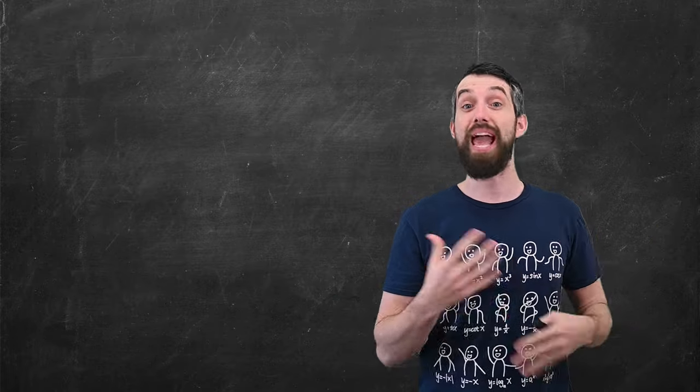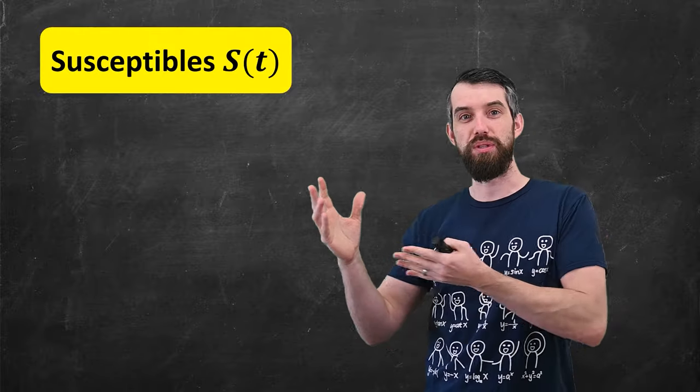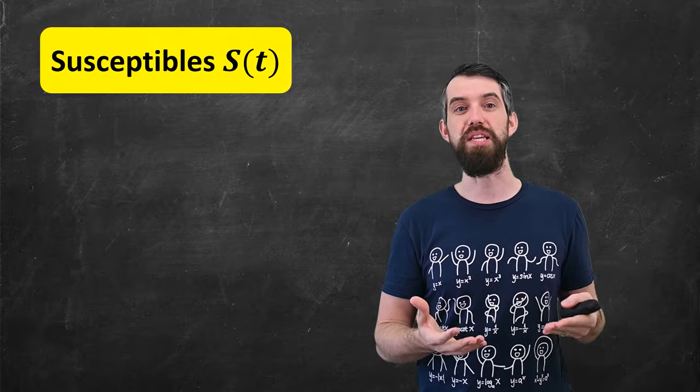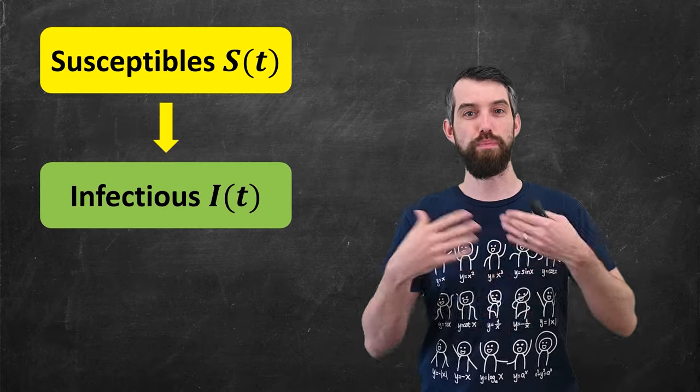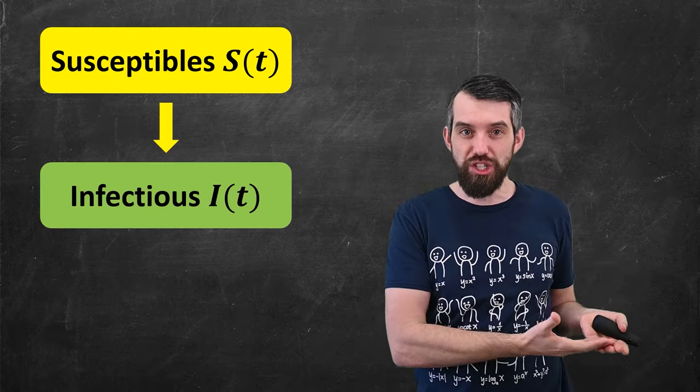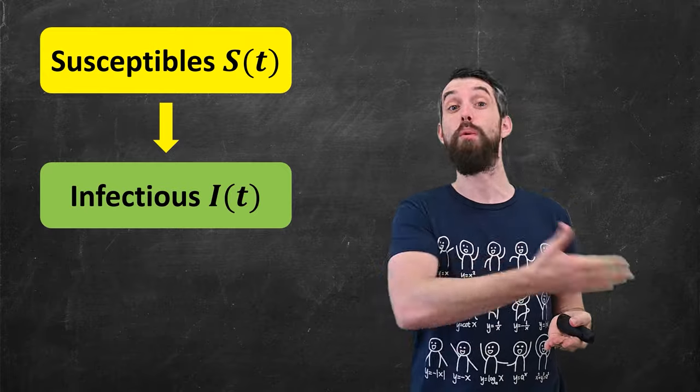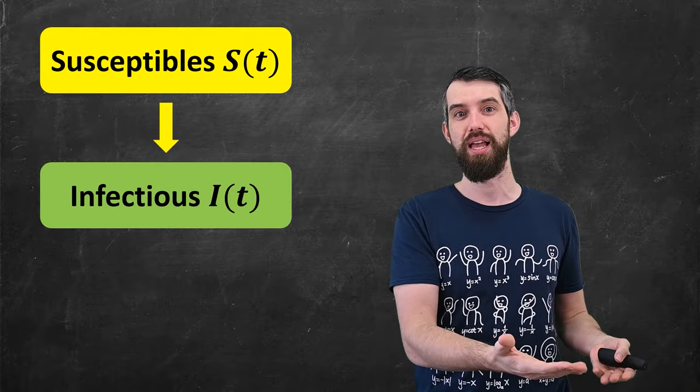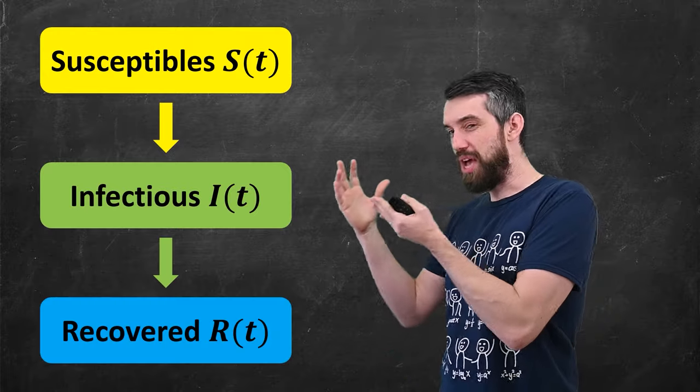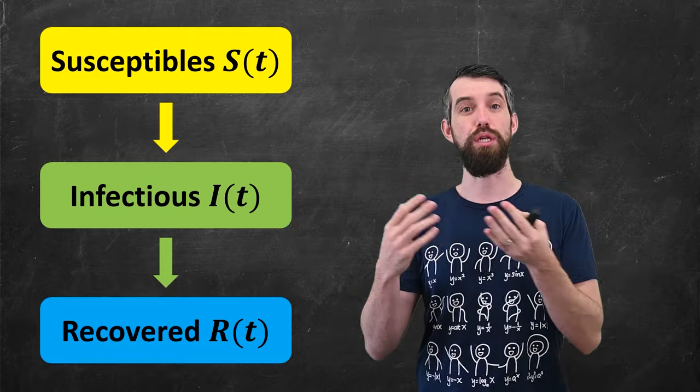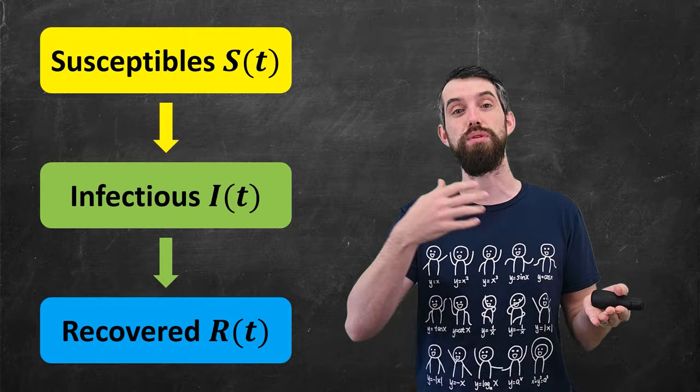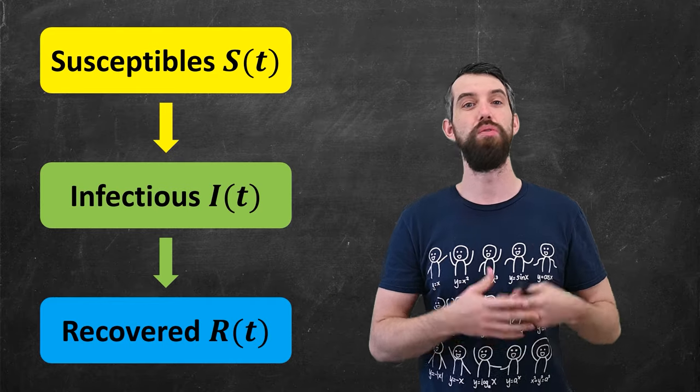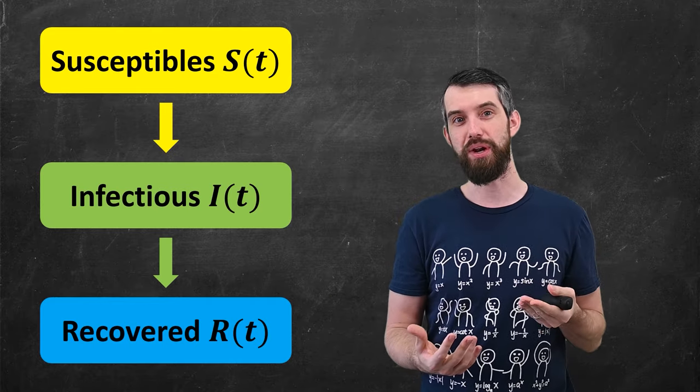It imagined first that there was a category of people called Susceptibles, and those are all the people at time t that are capable of getting the disease. And then from those susceptibles, a proportion would become infectious people, those that are going to go around and continue to spread the disease. And then those infectious people would go on to become recovered people. This term is euphemistic, but it refers to both people who recover from the disease, and unfortunately those that pass away from it. So the idea was that all people would be in one of these three categories.